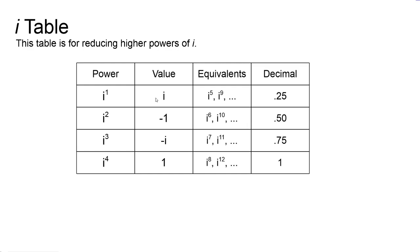i to the fourth power has the equivalent value of one. Other values equal to i would be i to the fifth and i to the ninth. Values equal to negative one: i to the sixth, i to the tenth. Values equal to negative i: i to the seventh, i to the eleventh. Values equal to one: i to the eighth, i to the twelfth, and so on. The last column — the decimal column — is for reducing higher powers of i. You look up the decimal you get after dividing by four, and it tells you which power of i it shares a value with.